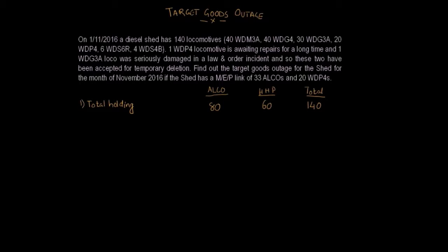Next we will reduce the total holding by the number of inferior service locos. Inferior service locos are all the shunting locomotives, so we reduce this by 10, which is 6 WDS6R and 4 WDS4B locomotives. So this becomes 70 for ALCO. There are no inferior HHP locomotives, so this remains 60. The total goes to 130.